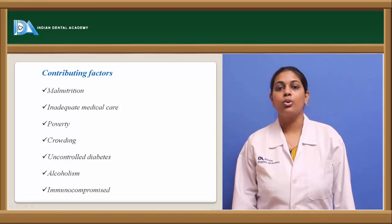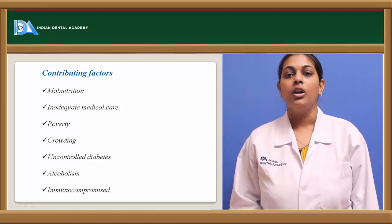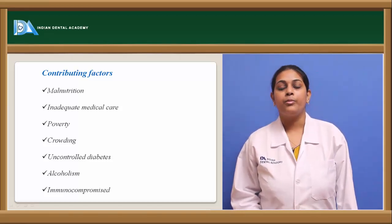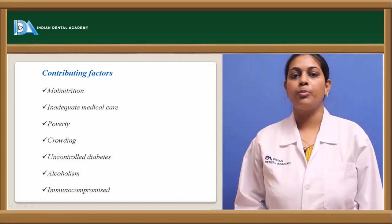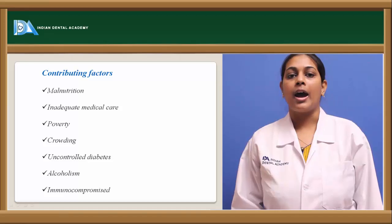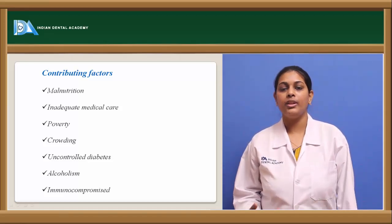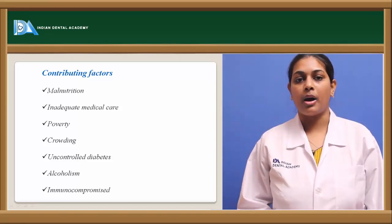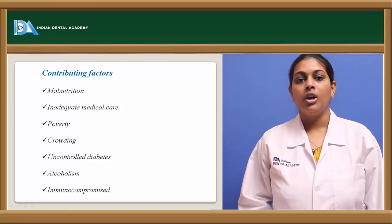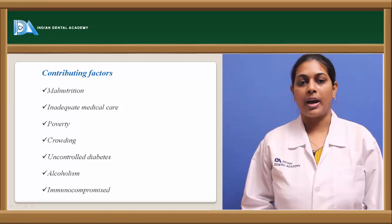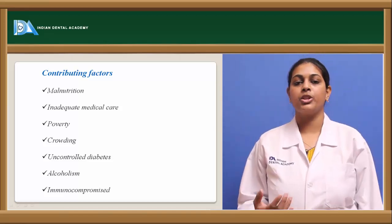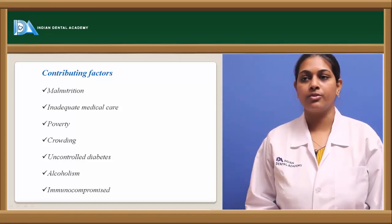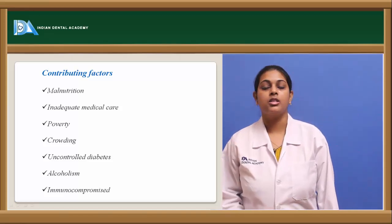Coming to the contributing factors that cause tuberculosis to sustain and develop more rapidly in the body: first is malnutrition. Since the immune system is based on proper dietary intake with high protein food, if nutrition is not proper, malnutrition results and the patient may develop tuberculosis from already ingested bacteria. Malnutrition acts as one of the contributing factors.